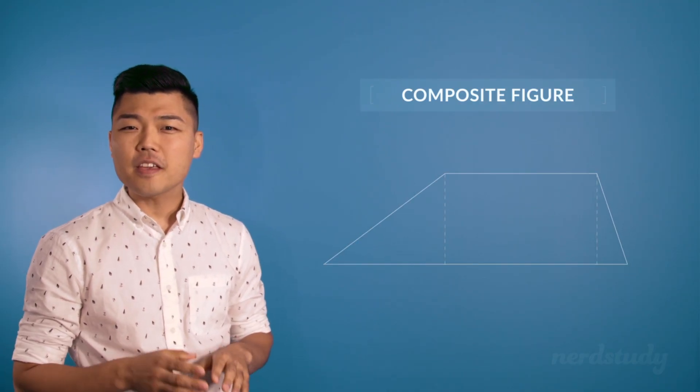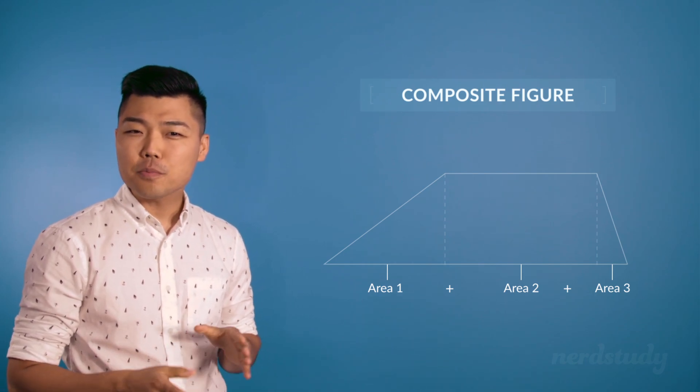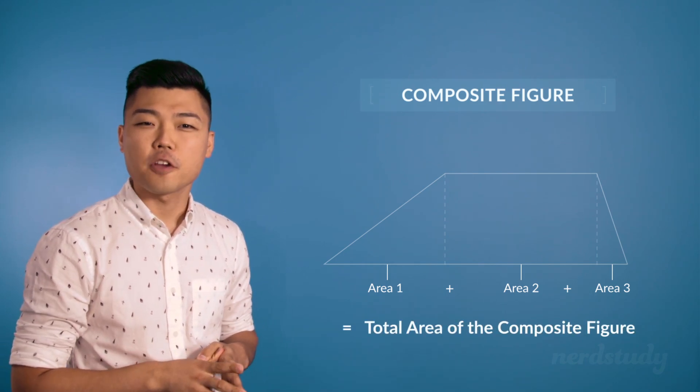If we get the areas of all three shapes and add these areas together, then we should be able to get the total area of this composite figure.